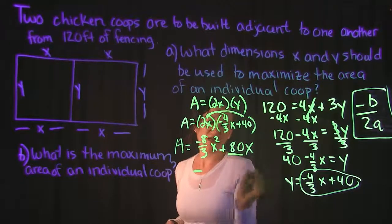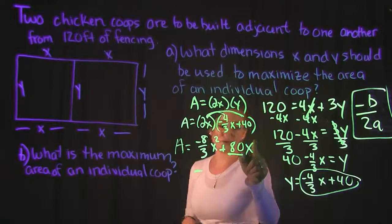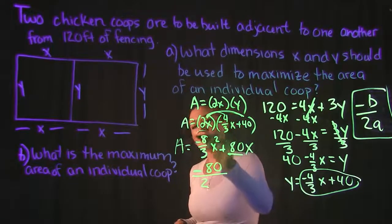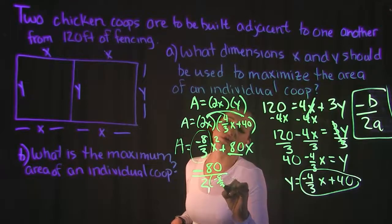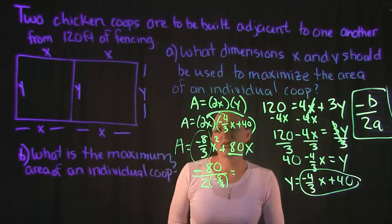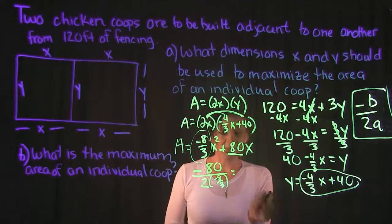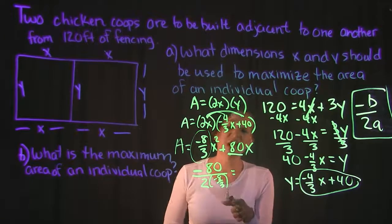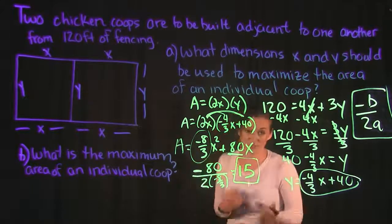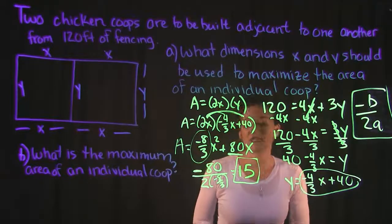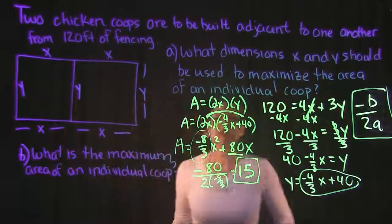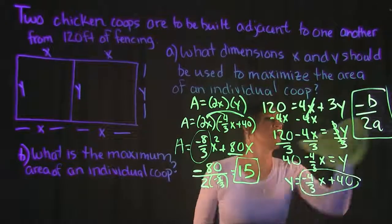Plugging in: B is 80 (the coefficient of the X term) and A is negative eight-thirds (the coefficient of the X squared term). So we compute negative 80 over 2 times negative eight-thirds. Simplifying that gives us X equals 15. That is the X value at the vertex — the dimension that maximizes area.